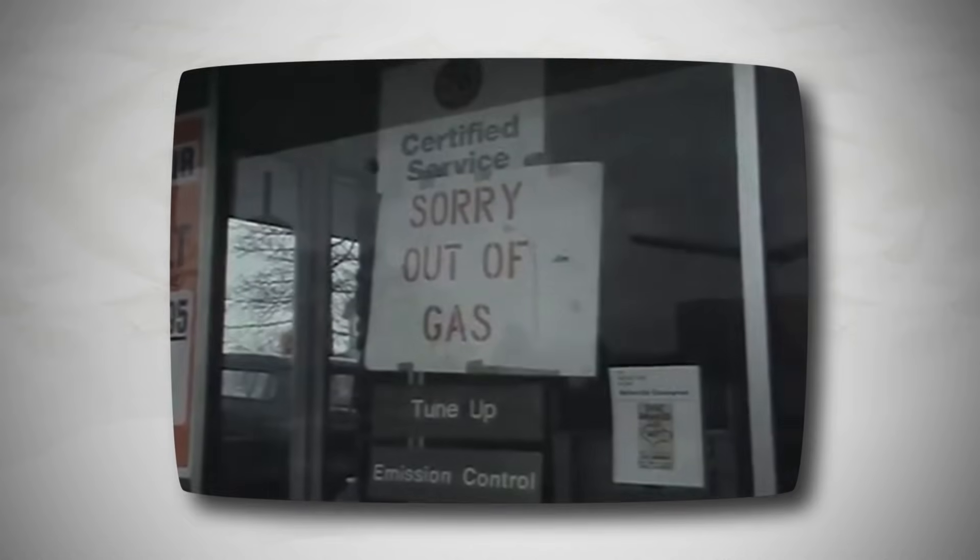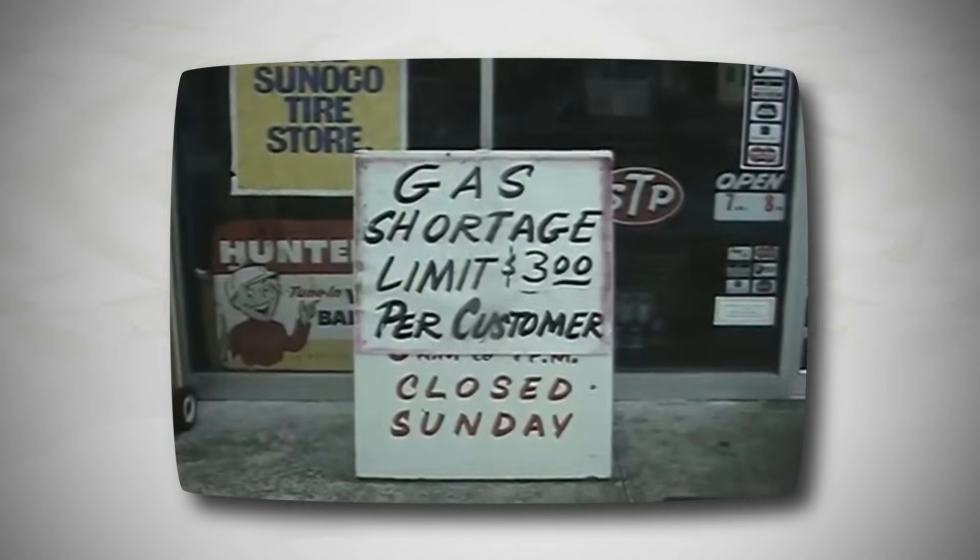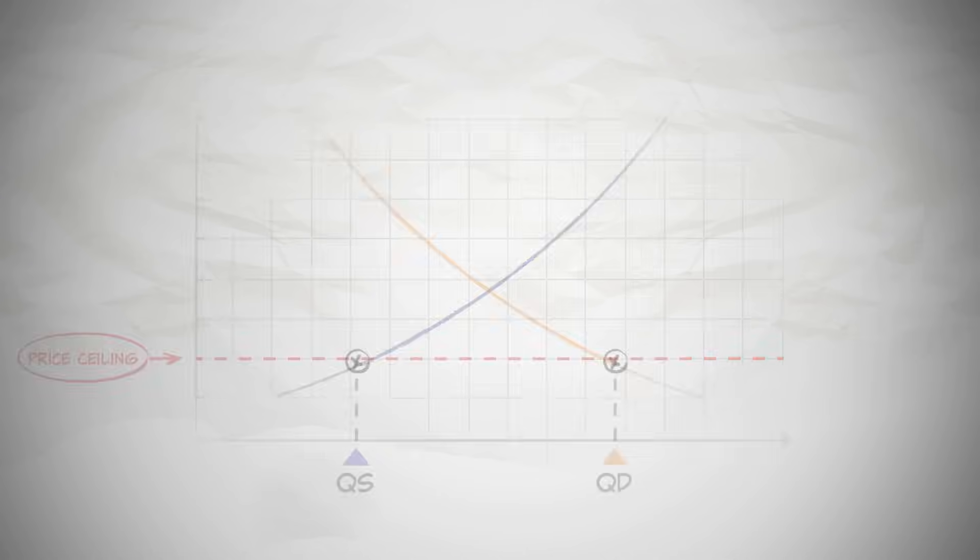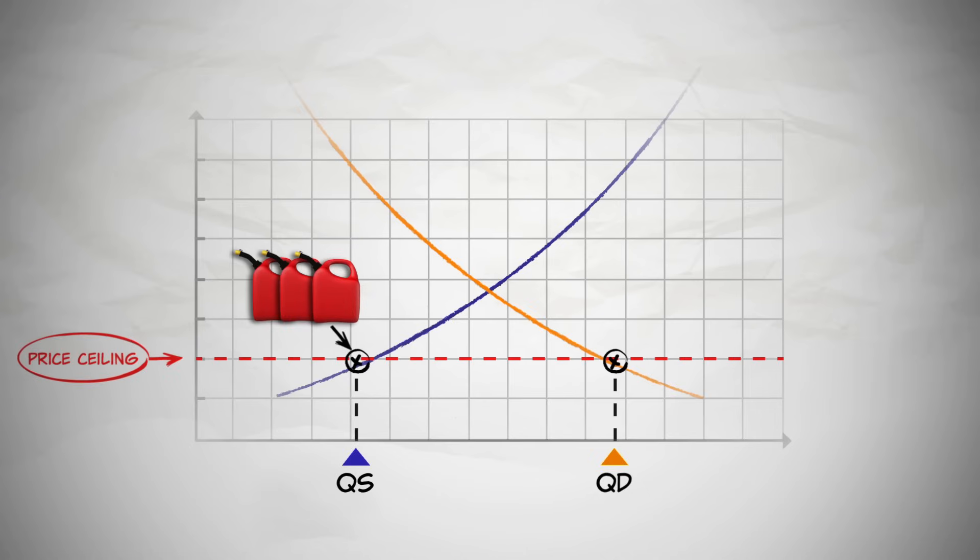For example, in the 1970s, price ceilings on gasoline meant that it was common to have no gas at the gas station. However, the story doesn't end there. More people want to buy gasoline than there was gasoline available. So who gets the gasoline? Rather than compete for gasoline by bidding up the price, buyers now competed by waiting in longer and longer lines.